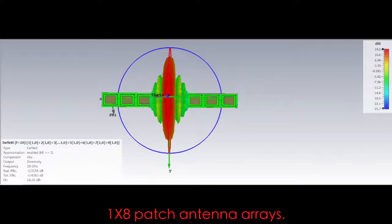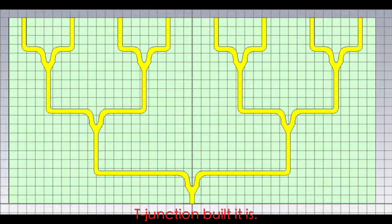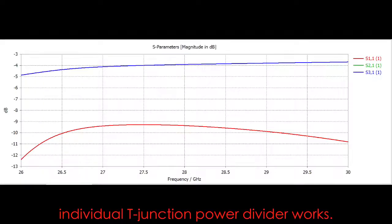1x8 patch antenna arrays: 1x2, 1x4, 1x8 T-junction build arrays. Simulate and optimize individual T-junction power divider. It works.